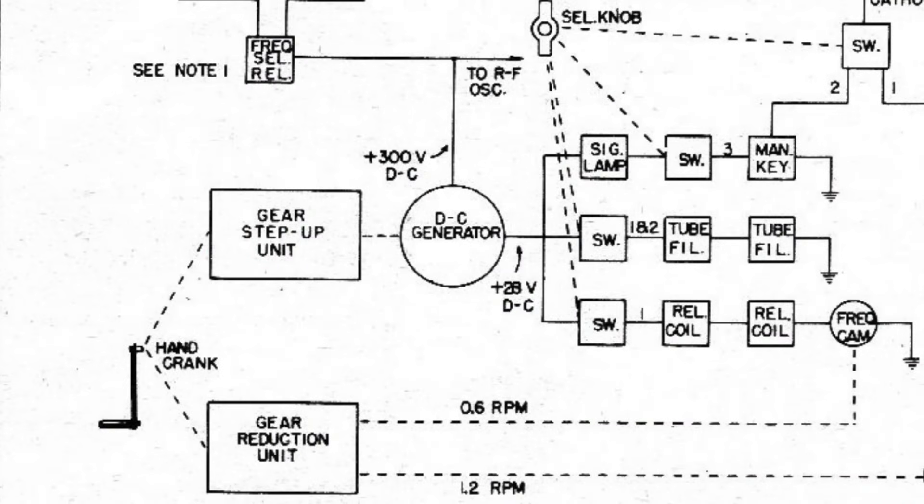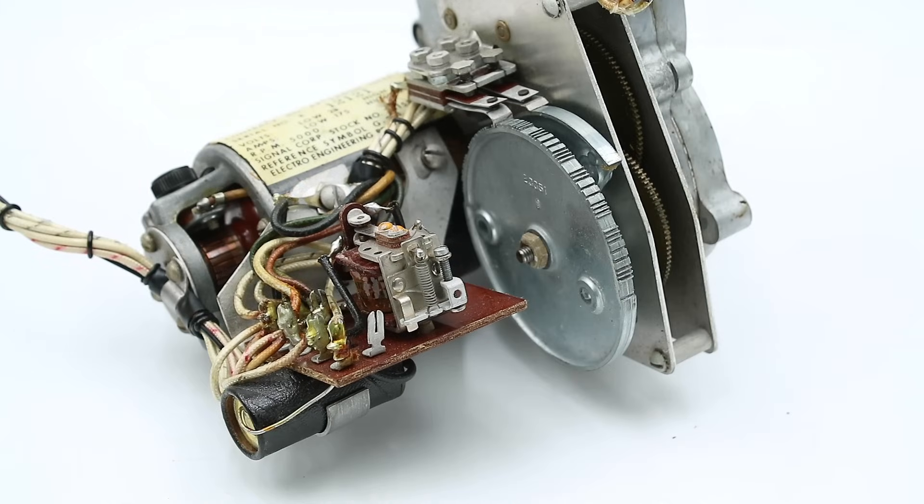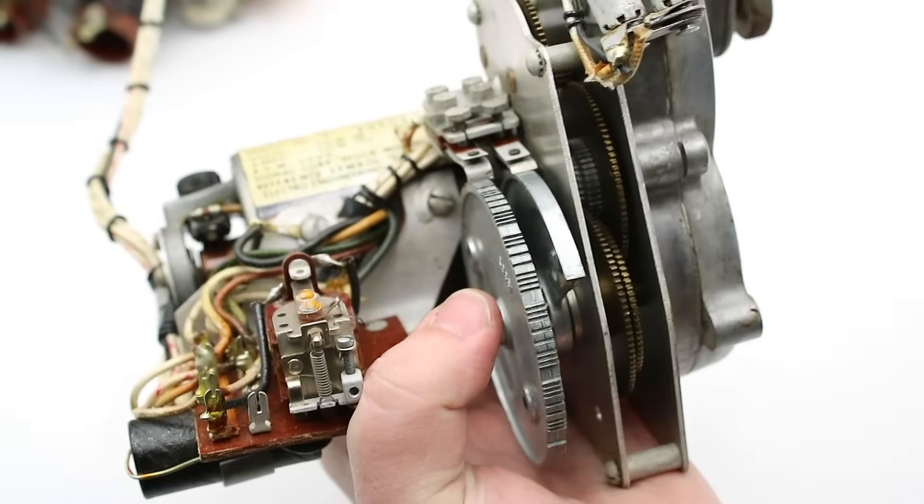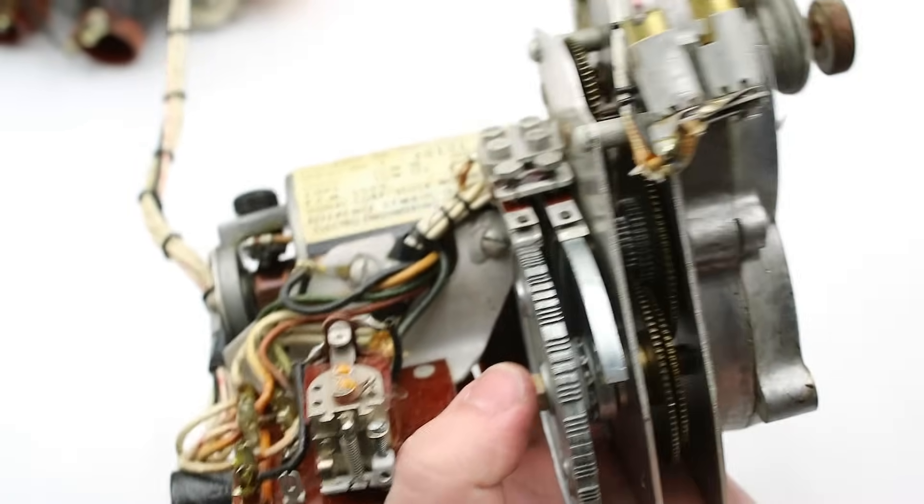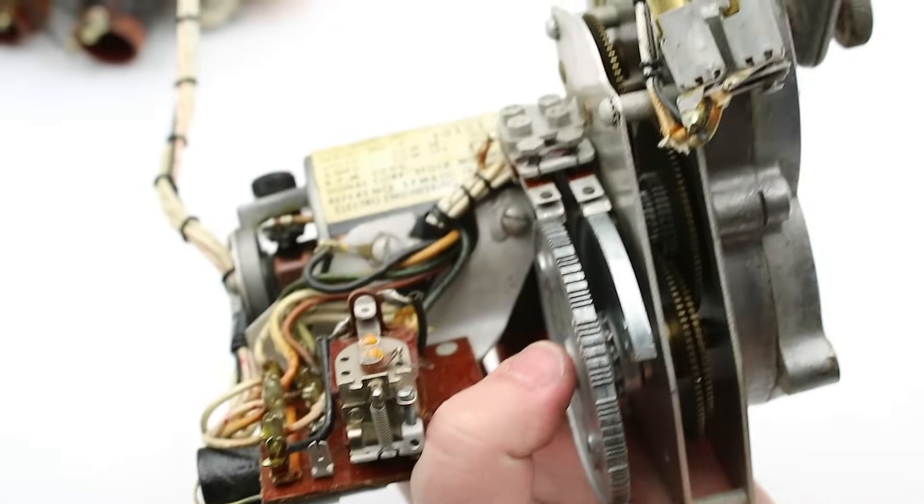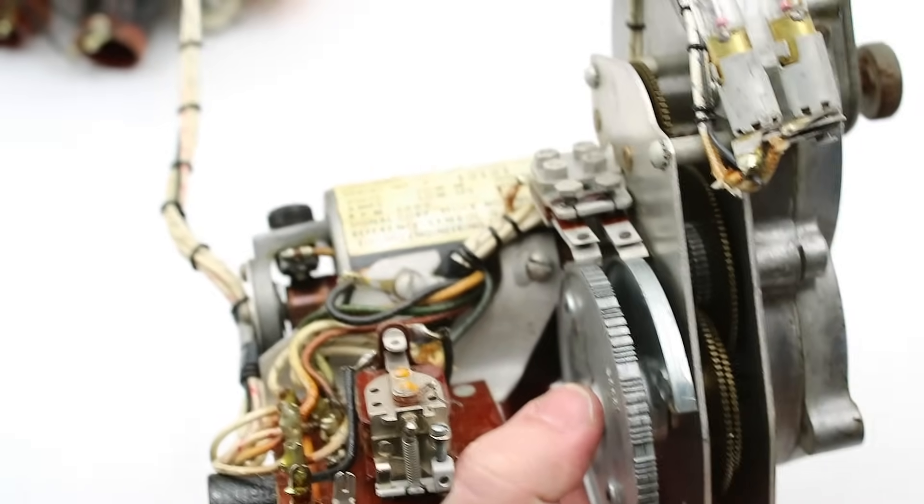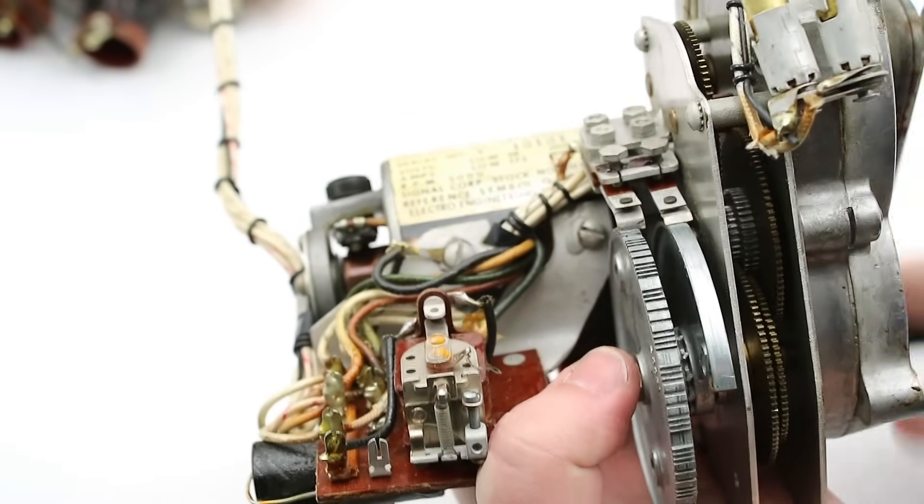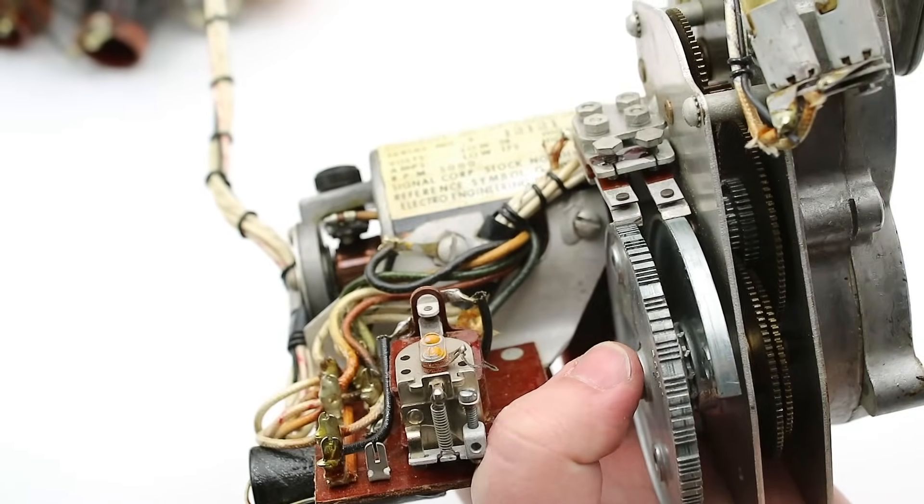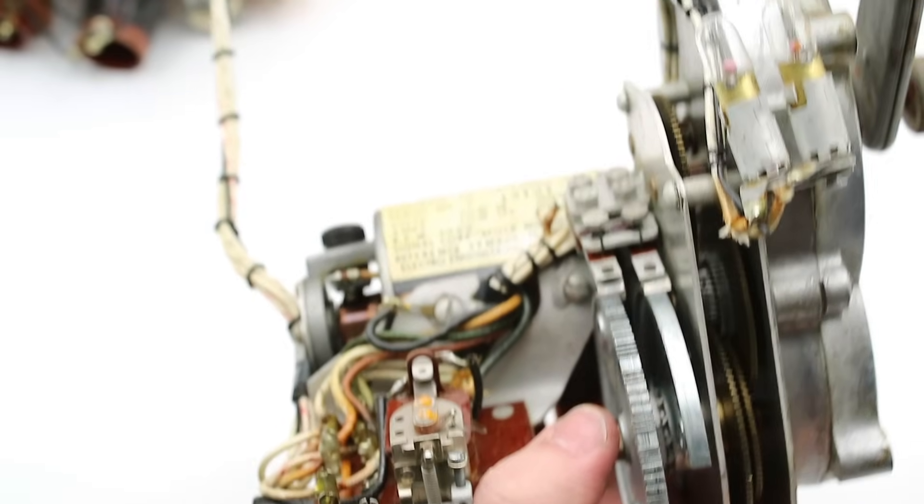So instead of two outputs, we now have three, one to run the dynamo as before, and two running at 0.6 and 1.2 RPM respectively, to run the automatic switching and signal cams. So whereas the SCR578 had two automatic signaling modes, this has only one, which transmits SOS for 20 seconds, followed by a continuous tone for 20 seconds, while the second cam, which rotates at half the speed of the first, switches the transmitter between 500 kHz and 8,364 kHz every 40 to 50 seconds.